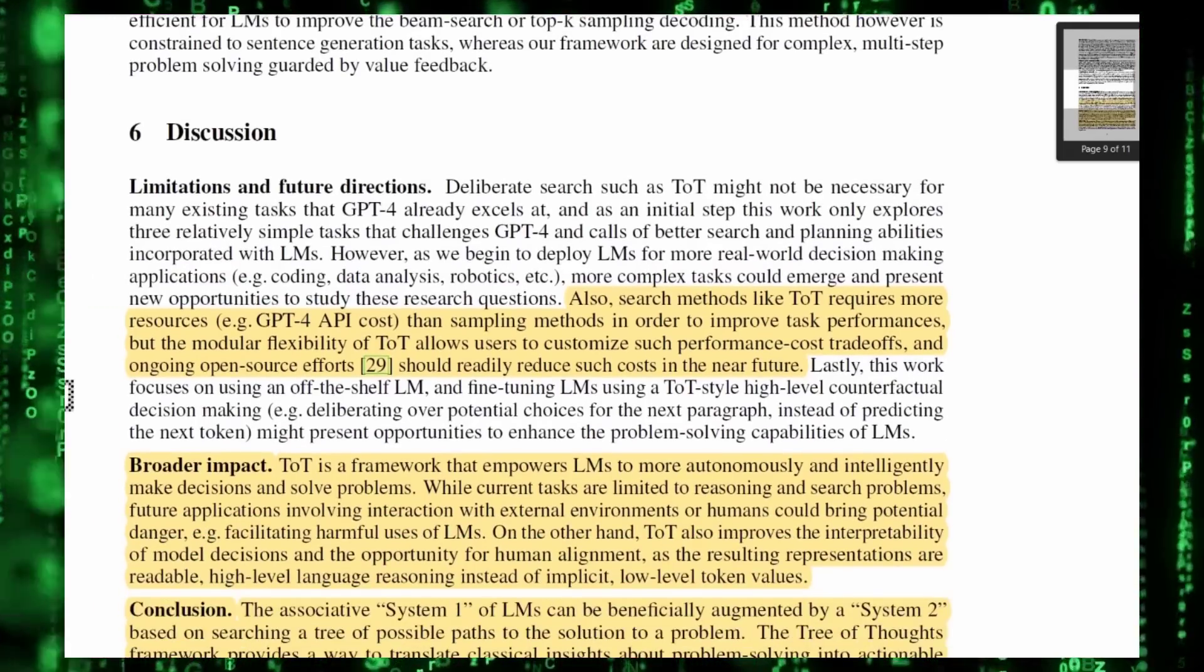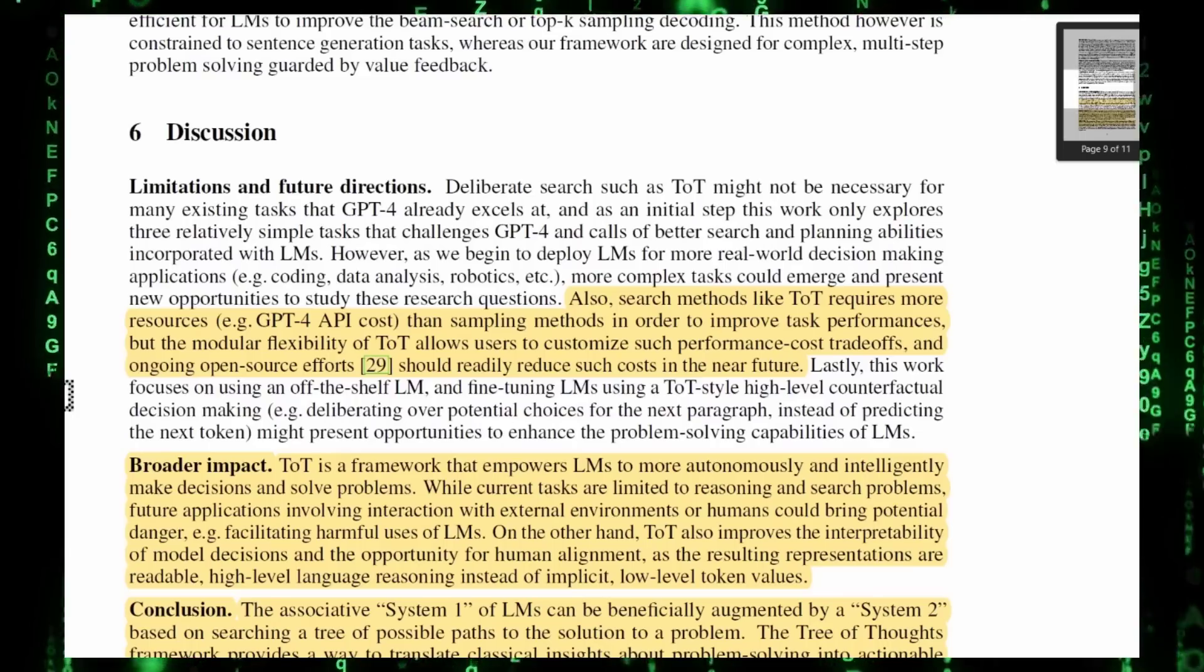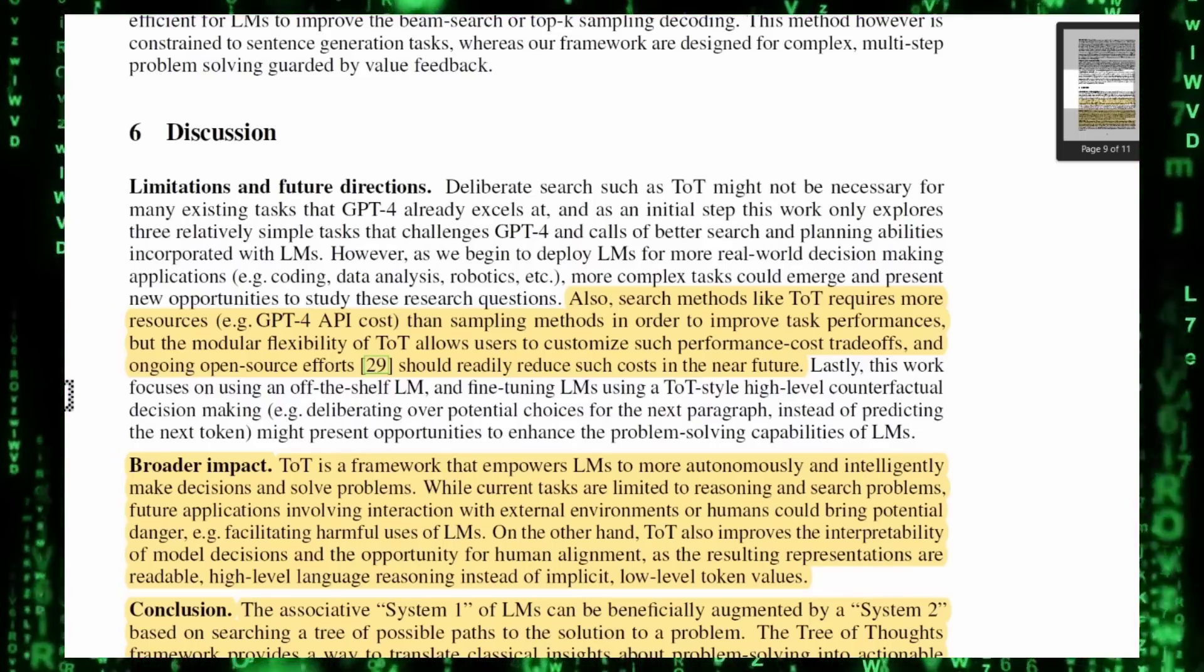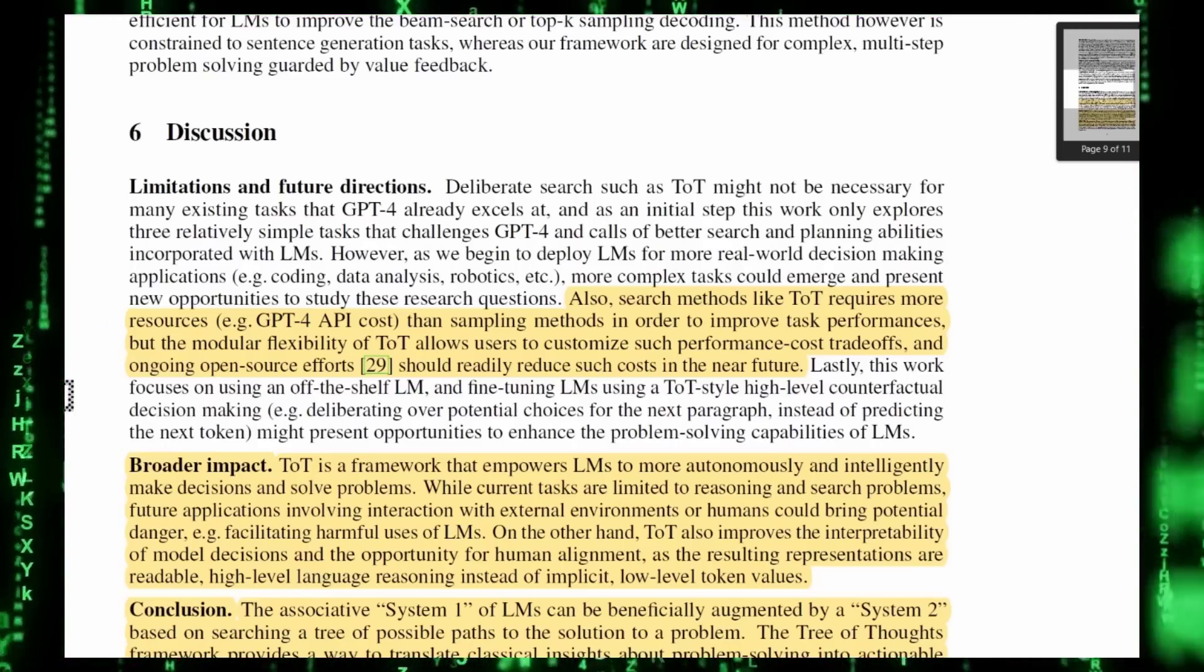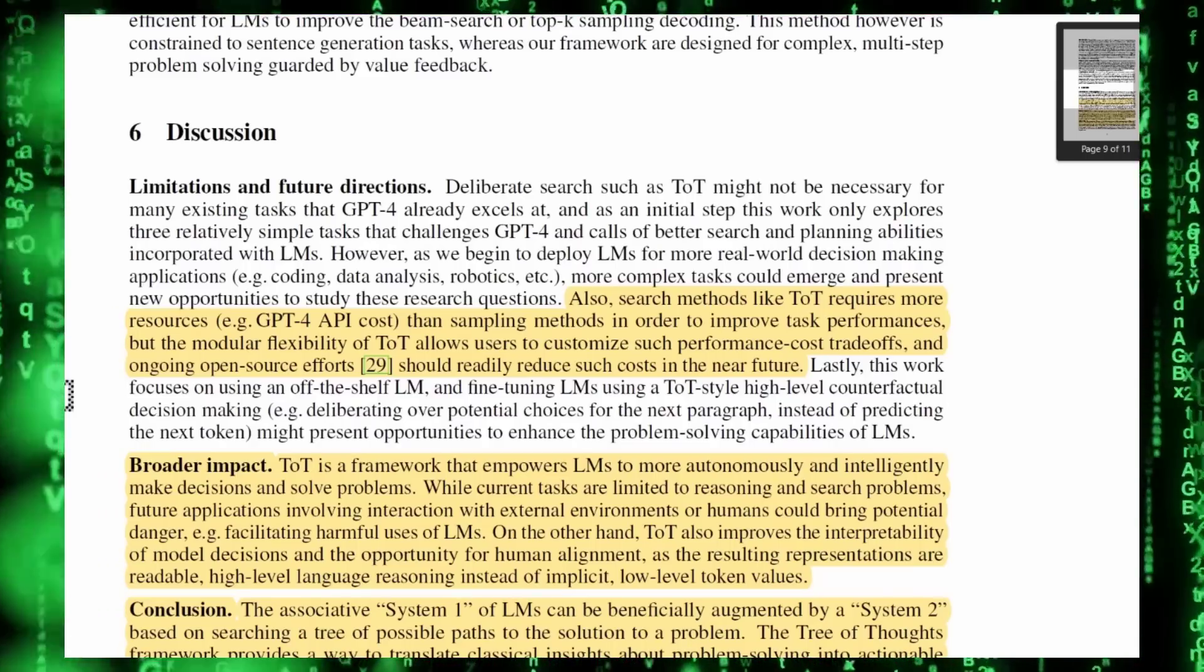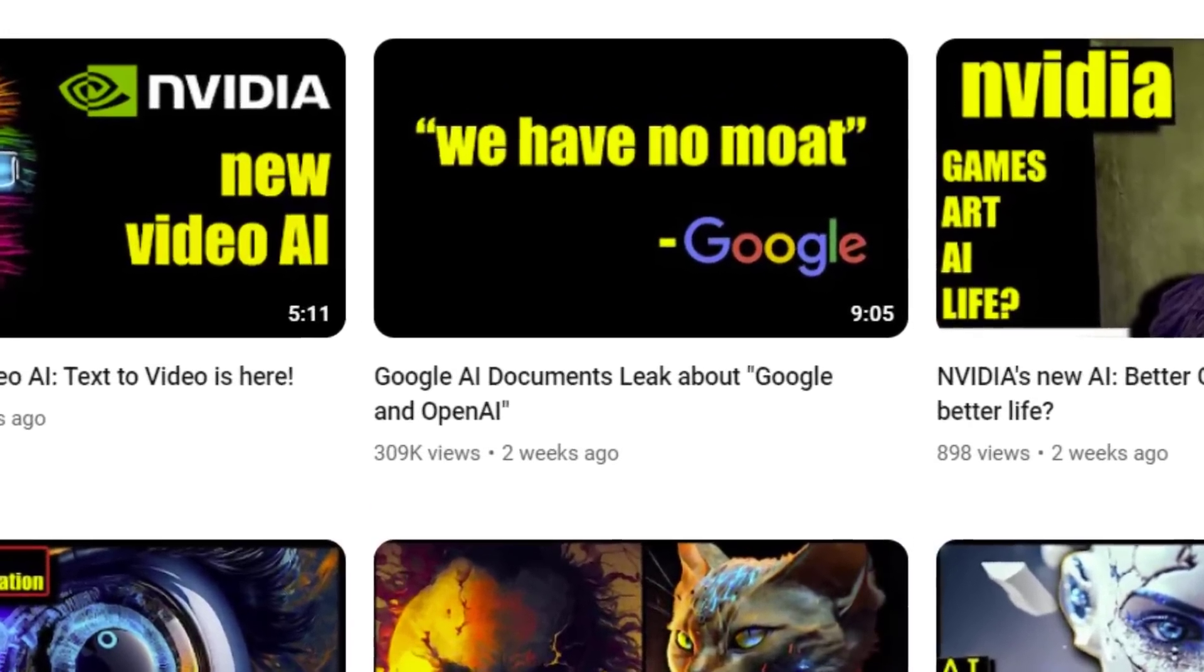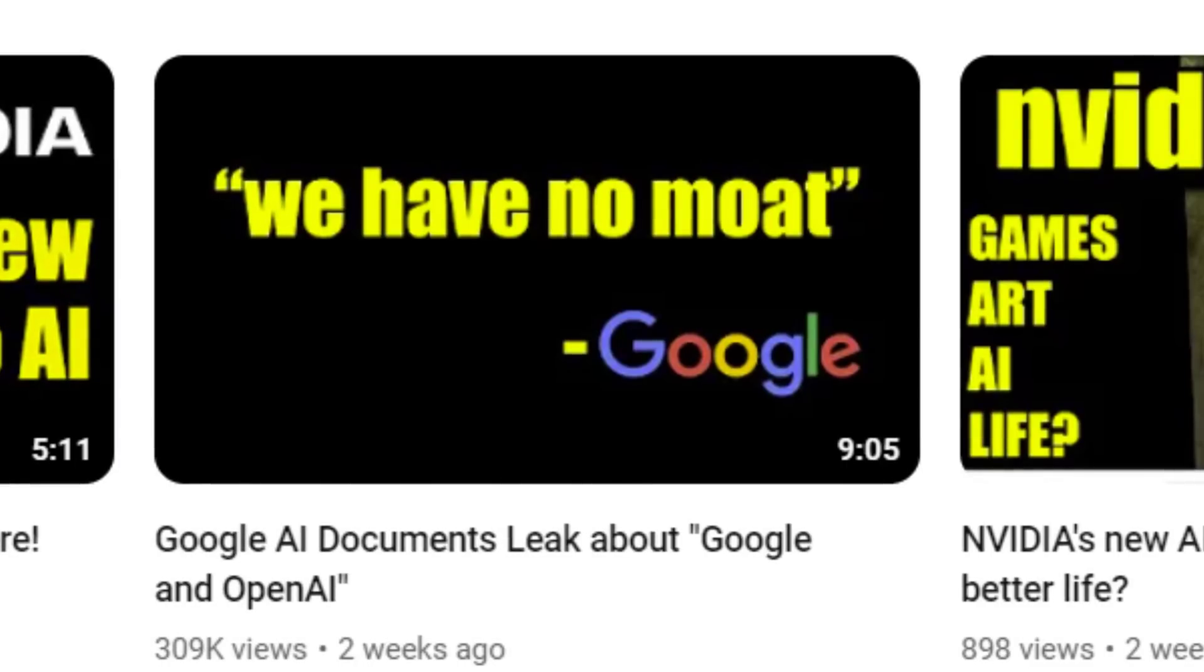Next, they quickly dive into limitations. Search methods like TOT require more resources. So if you're on GPT-4 API, it's going to cost more to run something that's like wide and deep. It's cheaper to do sampling methods in order to improve task performances, but the modular flexibility of TOT allows users to customize such performance trade-offs and ongoing open source efforts should readily reduce such costs in the near future. By the way, if you haven't heard how open source is absolutely crushing AI development, more so than the best funded companies on the planet, check out the We Have No Emote video. I'll link it in the top right of the screen or in the show notes down below.